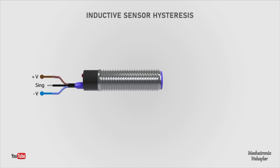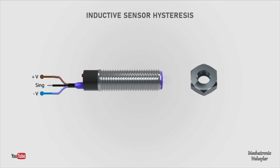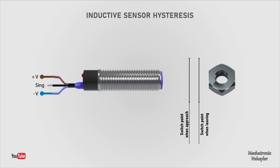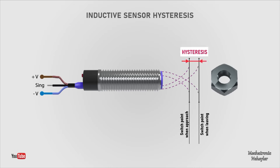When choosing a sensor, we must take hysteresis into account. When the metallic object approaches the sensor, it reaches a point where it is detected and the sensor sends an activation signal. When the object moves away, the sensor will continue to detect it up to a certain distance, which we call the deactivation or switching distance when moving away. The interval between these two points is known as hysteresis, which we must take into account when placing the sensor. Hysteresis is important because it prevents bouncing between operating states of the sensor.